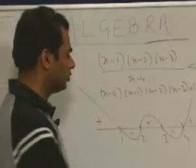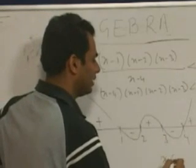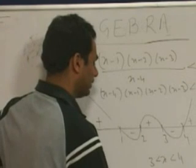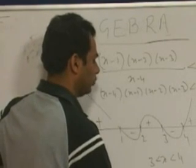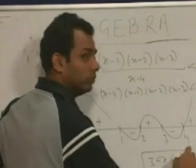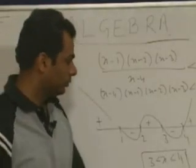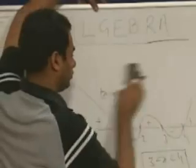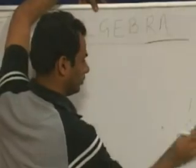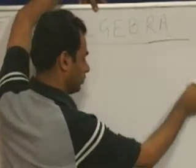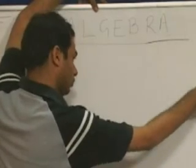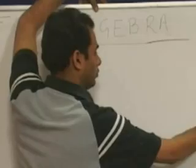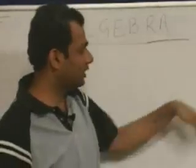Since we need the negative values, my answer is that x must lie between 3 and 4, and x must also lie between 1 and 2.